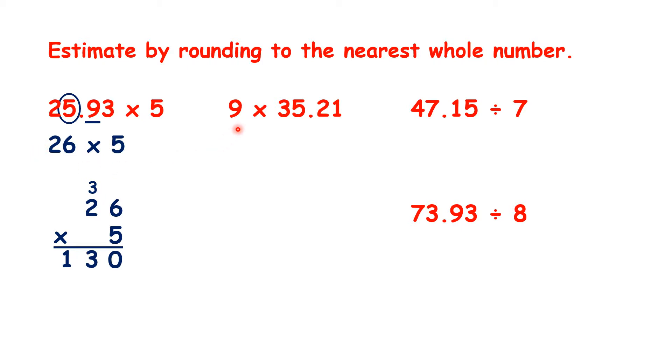Now, what about 9 times 35.21? Here we can see that 35.21 to the nearest whole number is 35, because that 2 in our tenths tells us that we're rounding down.